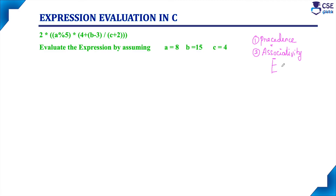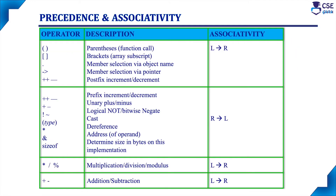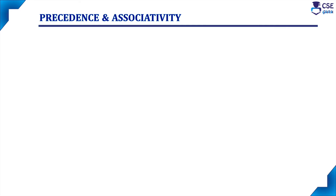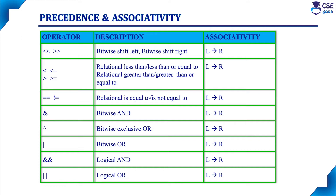There are two types of associativity: one is left-to-right associativity and another one is right-to-left associativity. And also, the precedence and associativity table — this table we should be thorough with in order to evaluate an expression. This table explains, for each operator, what is the hierarchy of priority and its associativity.